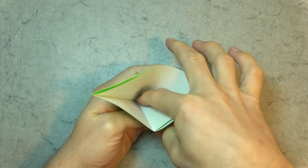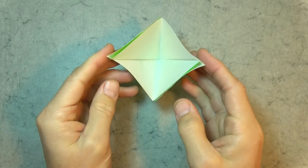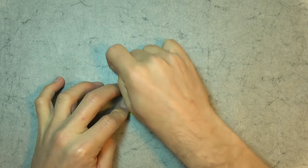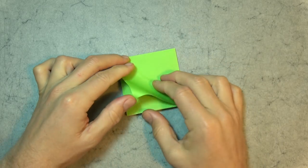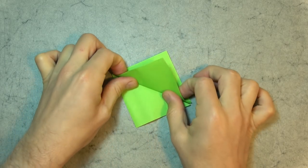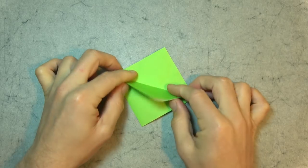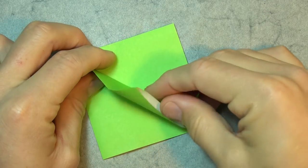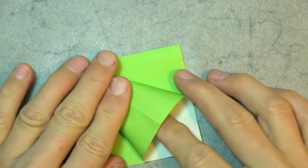Now reach in, open the big pocket, and bring the two ends together like this. And fold this flap up and down. And now open the pocket and squash it.